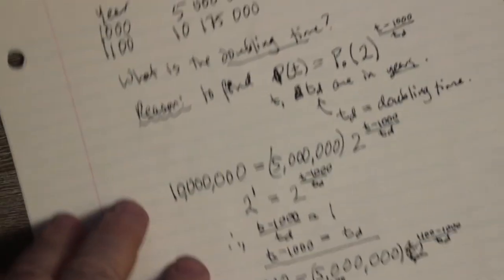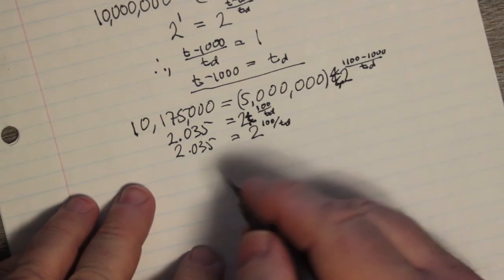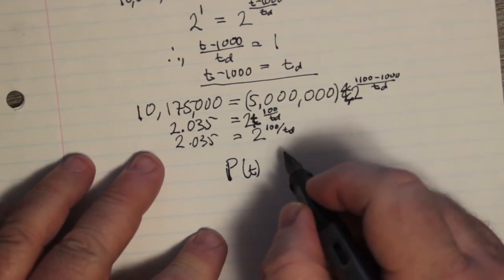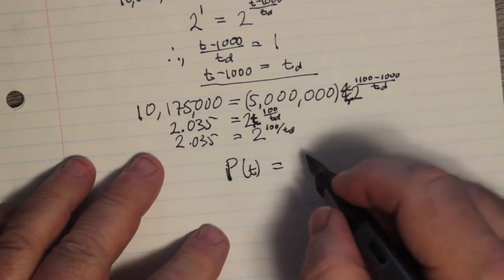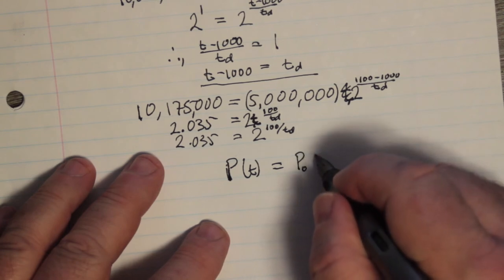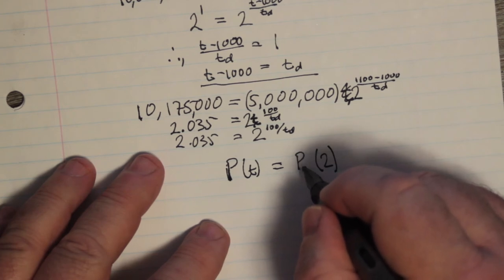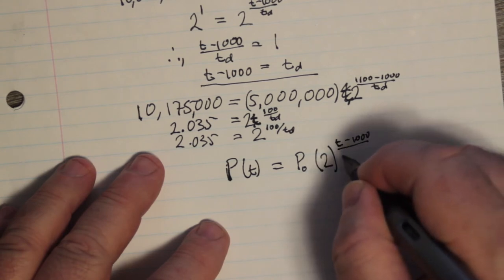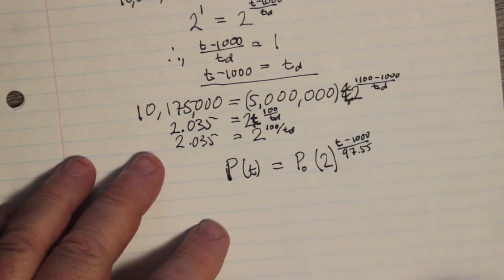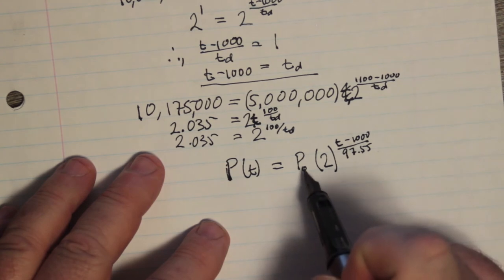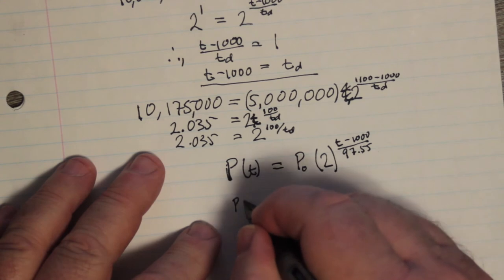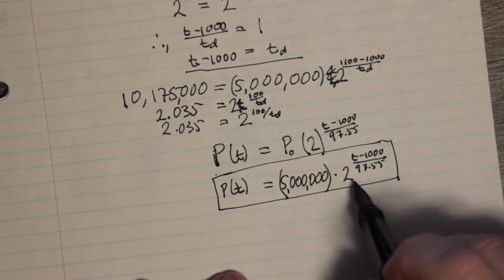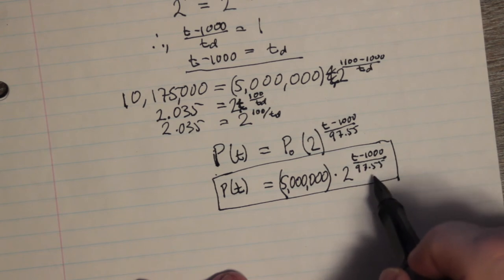So that means that to rewrite this function here, we have to now rewrite it as P of T. P of T, if P is our population function with respect to time, with respect to the year, the calendar year, we go with P naught times 2 to the power, actually we have a number for P naught, it's 5 million. But the important part is T minus 1,000 divided by 97.55. So now, all we need to do now is plug in for T. This number we know. So we can actually write it out so that we have our function fully expressed. As you can see here, we have 5 million times 2 to the power of T minus 1,000 over 97.55.